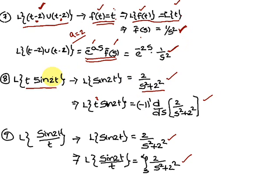Eighth problem: Laplace of t·sin(2t). First find Laplace of sin(2t). For t·sin(2t), perform one differentiation. If it were t²·sin(2t), do two differentiations. If t³·sin(3t), do three differentiations.